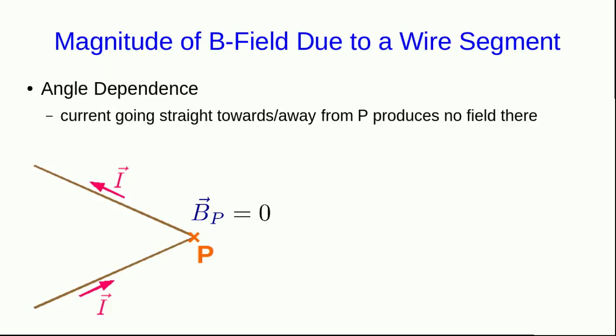The crucial observation is that if a current is going straight towards or away from the point of interest P, then it produces no field there. So in this arrangement where there are two wires, one going straight towards P and the other going straight away, there's no field there and you can verify that experimentally.